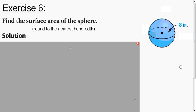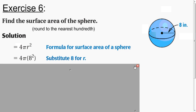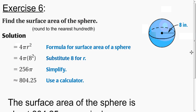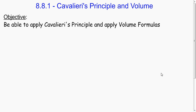Try to calculate the surface area of the sphere to the nearest hundredth, and I'll show you my solution. Using our formula 4πr², we substitute and get 256π. Plugging that into the calculator and rounding to the nearest hundredth, we get 804.25 square inches. In this lesson, we learned about Cavalieri's Principle and how to derive and apply the different formulas for volume. Thank you for watching this video.